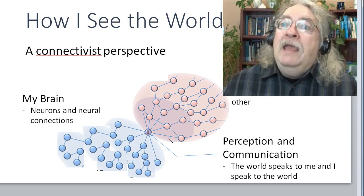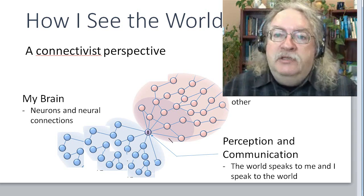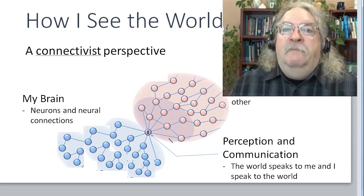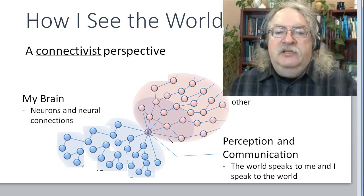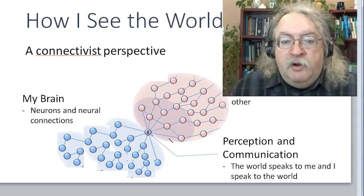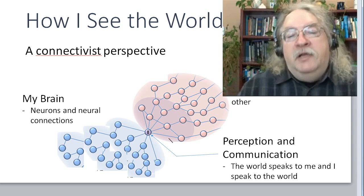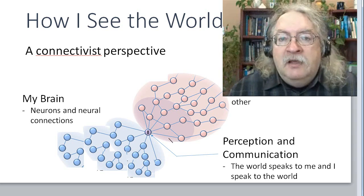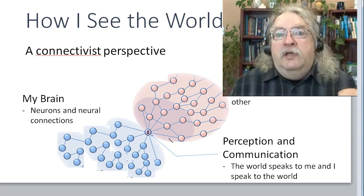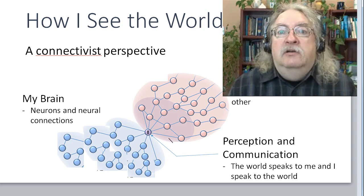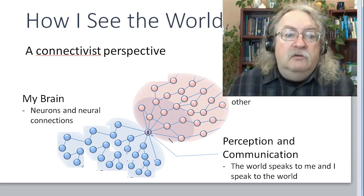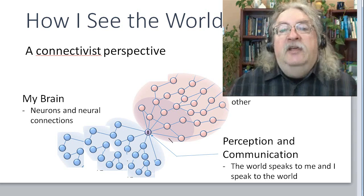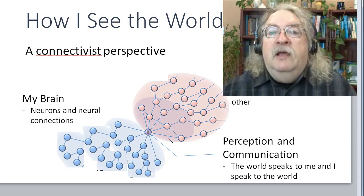The way I see the world, and the actual mechanisms I use to see the world, are not simply the five senses—seeing, touch, sight, etc. I see the world with my brain, with my neurons and the connections between the neurons. The really important point, where the interaction and the learning occurs, is the perception and communication—the interface between myself and the world.